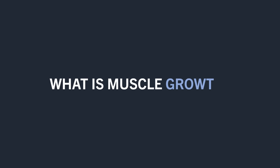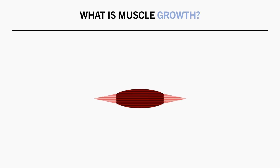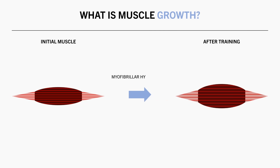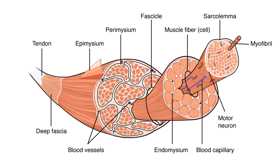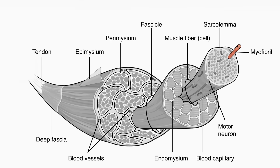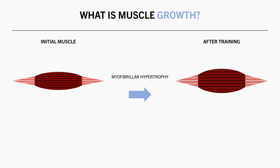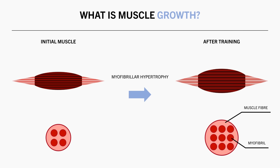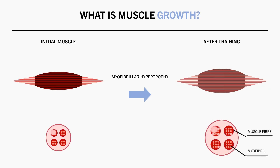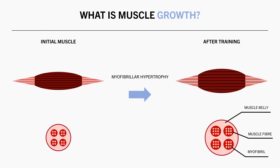First, we need to understand what muscle growth is in the first place. Muscle growth is simply an increase in the size of our muscles. This occurs primarily by what is known as myofibrillar hypertrophy. If we look at the anatomy of a muscle, myofibrils are the smallest units of muscle, which are basically just bundles of contractile tissue. Muscle growth occurs as a result of the number of these myofibrils increasing, making each muscle fibre larger in diameter, and resulting in a thicker overall muscle belly.